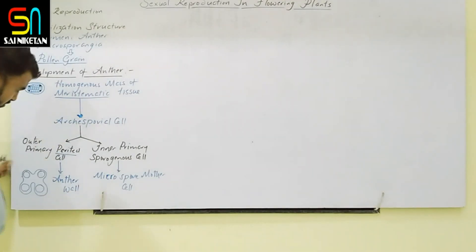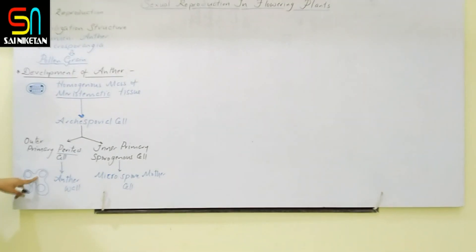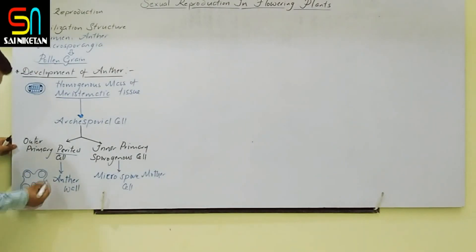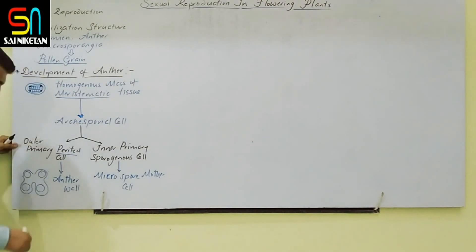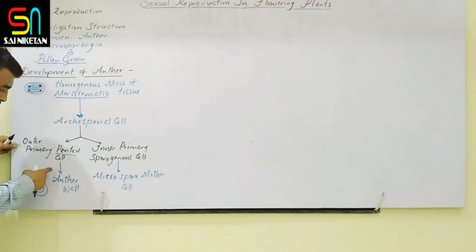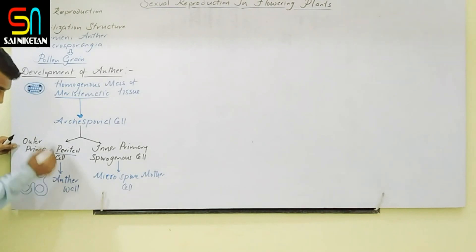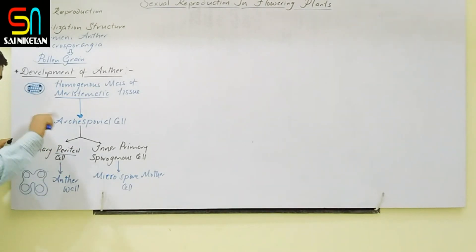The primary sporogenous cell differentiates and produces the microspore mother cell. The primary parietal cell undergoes repeated periclinal divisions to produce the anther wall. From outside to inside, four layers are produced: epidermis, endothecium, middle layer, and tapetum. All four layers are produced from the primary parietal cell — together forming the anther wall.